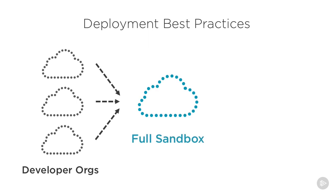Once a developer is done with their changes and all their test classes pass, it's time to deploy their components into a full sandbox org. The difference between a full sandbox org and a developer org is that full sandbox orgs have the same data your production org has, while developer orgs typically only have a subset or even none of that data. Once the code is deployed into a full sandbox org, you'll typically run all your test classes again, and if you're lucky, get a QA person to test your stuff too.